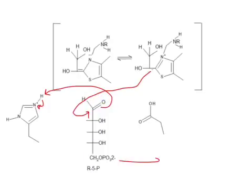That's going to give us a seven carbon compound called sedoheptulose 7-phosphate. We're going to get a seven carbon sugar out of this.